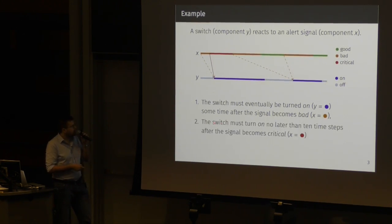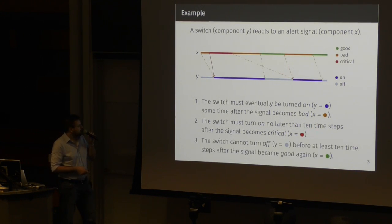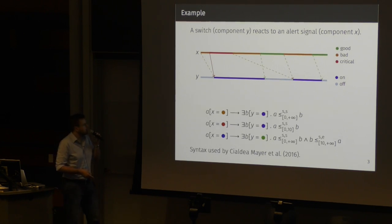We want that the switch must eventually be turned on sometime after the signal becomes bad, which is the orange signal. So this is the first constraint. The second is similar. We want that the switch turns on no later than 10 time steps after the signal becomes critical. So the constraint is similar, but we have an unbounded deadline constraint of 10 time steps. And then we want that the switch cannot turn off before at least 10 time steps after the signal became good again. So we want to keep the switch on.